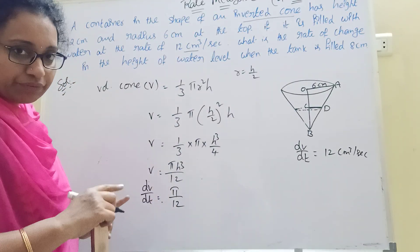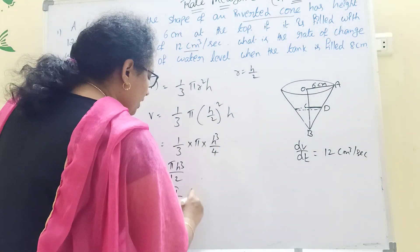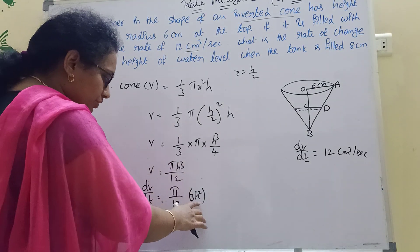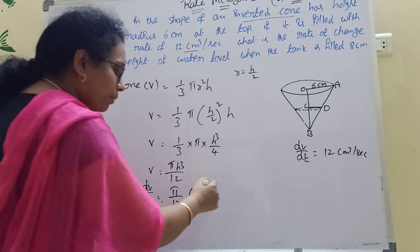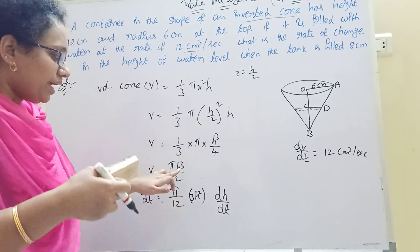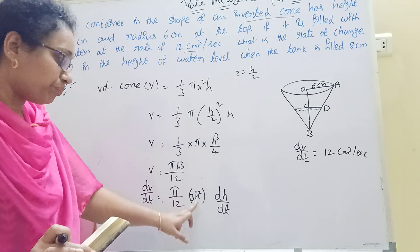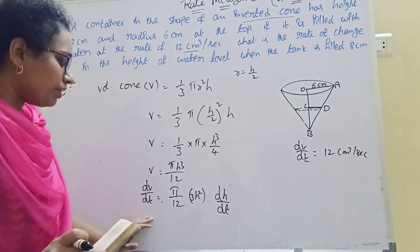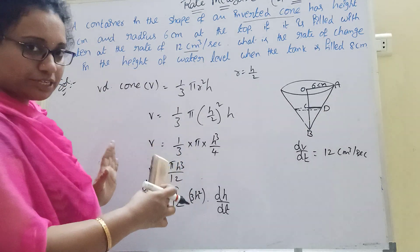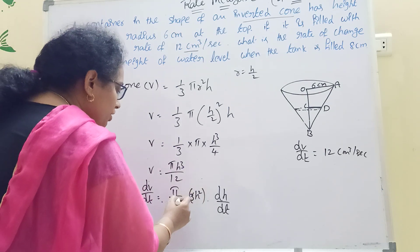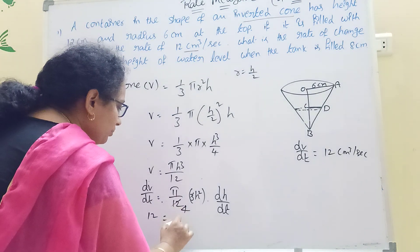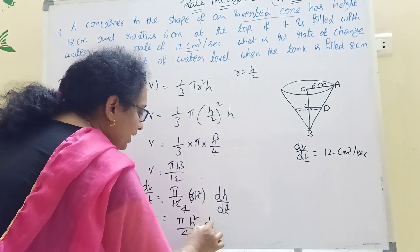Differentiating h cubed with respect to t: the derivative of h cubed is 3h squared times dh by dt, using the chain rule. So dV by dt equals pi by 12 times 3h squared times dh by dt, which simplifies to dV by dt equals pi h squared by 4 times dh by dt.